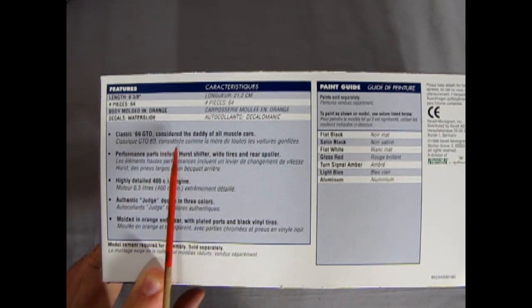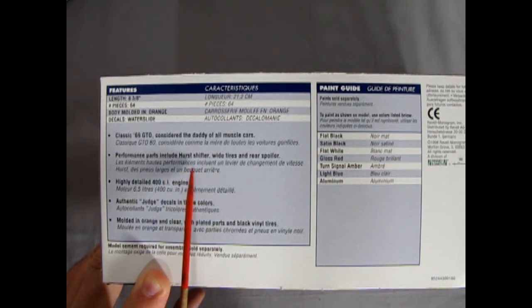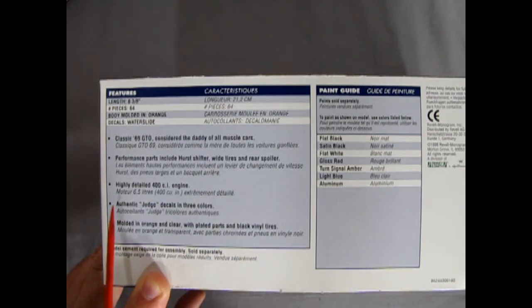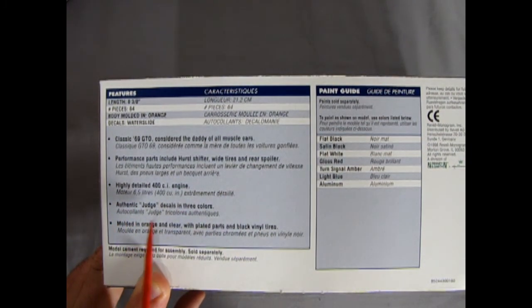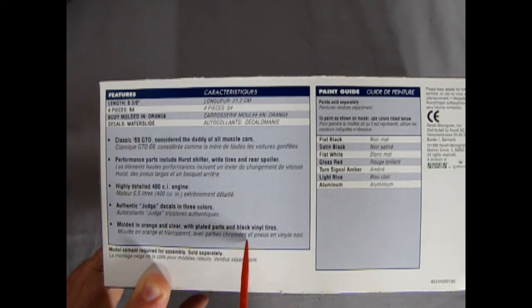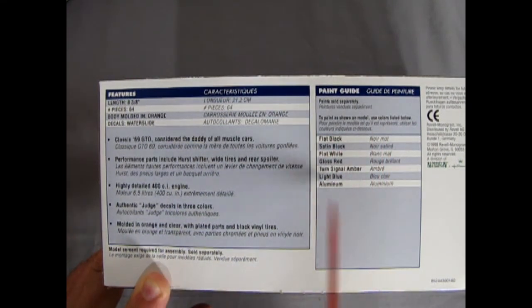Classic 69 GTO considered the daddy of all muscle cars. Performance parts include a hurst shifter, wide tires and rear spoiler. Highly detailed 400 cubic inch engine. Authentic Judge decals in three colors which I'm missing. Molded in orange and clear with plated parts and black vinyl tires. And then here's our colors here that it calls for.